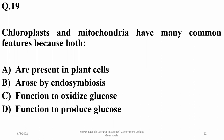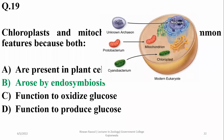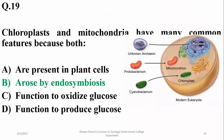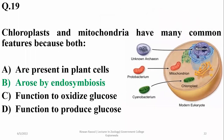Question 19: Chloroplasts and mitochondria have many common features because both arose by endosymbiotic mechanism — endosymbiosis. That is why they share common features such as double membrane, ribosomes, and hereditary material (DNA).